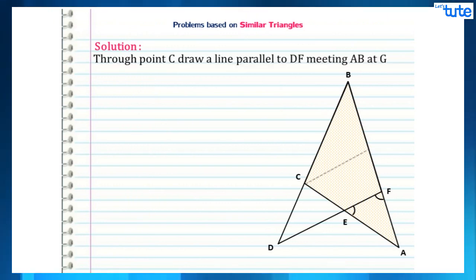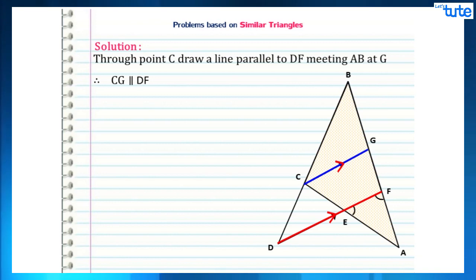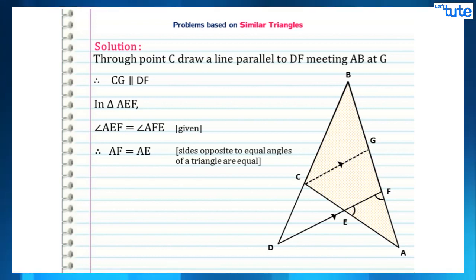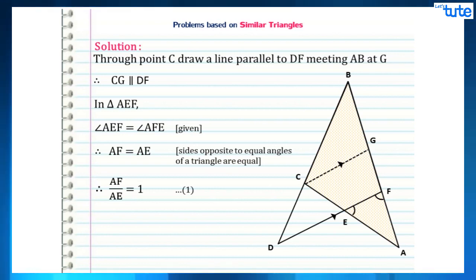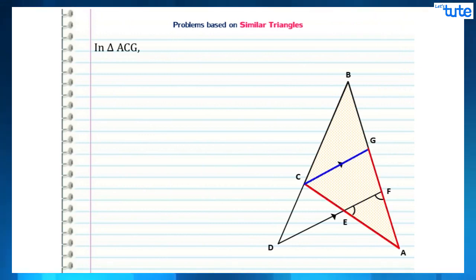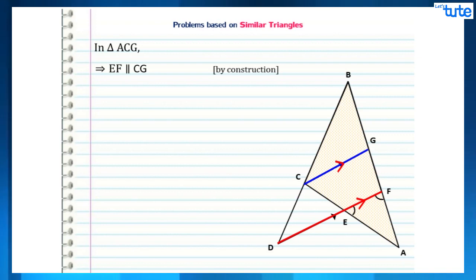Before starting to solve this problem, we first construct a line through point C parallel to DF, meeting side AB at point G. Therefore CG is parallel to DF. Now consider triangle AEF. In this triangle, it is given that angle AEF = angle AFE. Since sides opposite to equal angles of a triangle are equal, we can say that AF = AE, which can also be written as AF/AE = 1. We will consider this as equation 1.